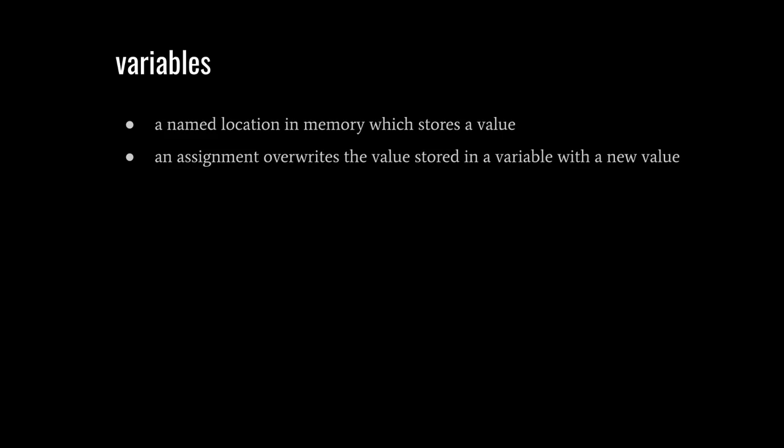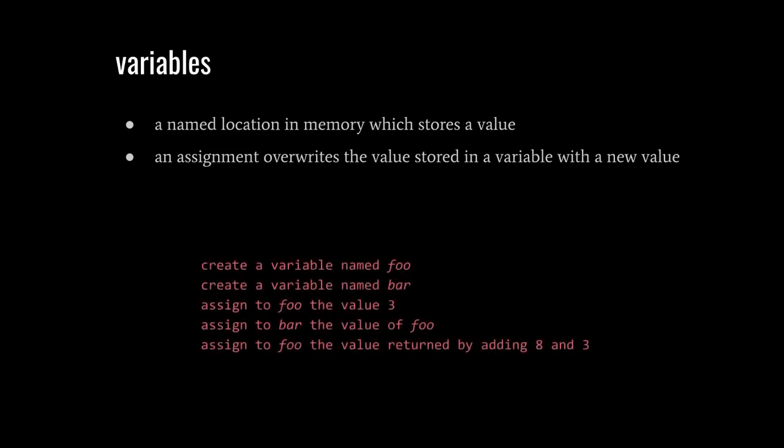In practice, you should pick good, meaningful names that indicate what is being stored in these variables. But whatever the name, having created a variable, you can store a value in it with what's called an assignment. An assignment takes a value and stores it in a variable by overriding whatever was already there. So in our code, we might create some variable named foo and another variable named bar, then assign to foo the number value three. We can also take the value of an existing variable and assign it to another variable - assign to bar the value of foo. We can also assign to variables the result of operations. We can assign to foo the value returned by adding eight and three, so the value 11 would be stored in foo.